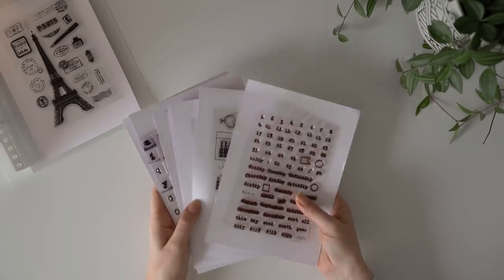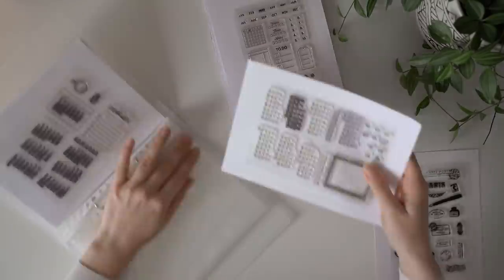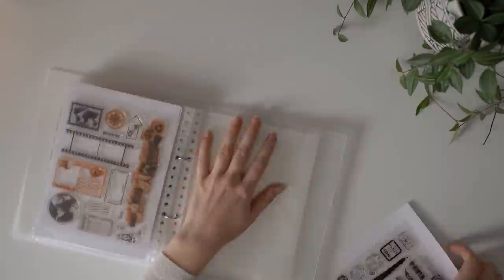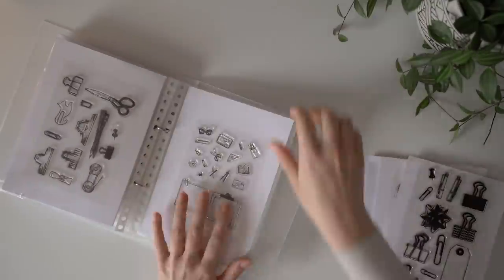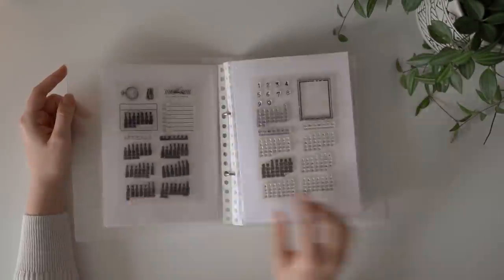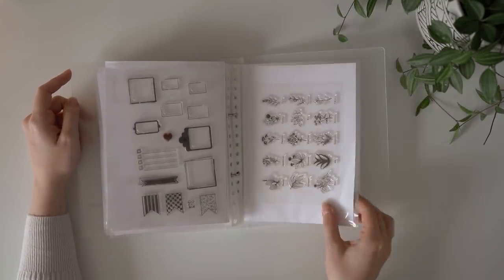I did this to all of the stamps and then I put them into the sleeves, trying to kind of organize them by category like date stamps, letter stamps, decorative stamps and so on. This way you can quickly flip through the folder and see all of the stamps that you have, and they're also very easy to put in and out.